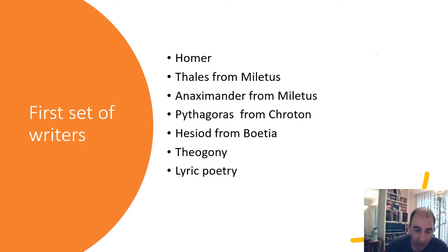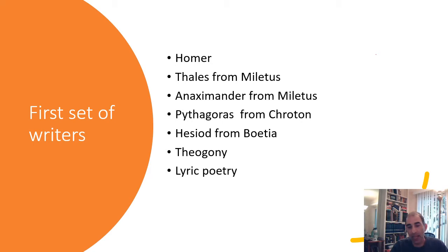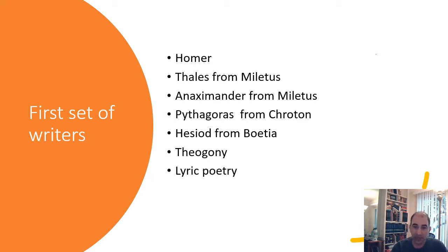Another term to know is lyric poetry. Homer wrote epic poetry, which is long. Lyric poetry is different - it is played to music on an instrument called a lyre, which is a small harp-like instrument. It's short, and you can write lyric poetry about anything. This brings us to one of the notable lyric poets from ancient Greece.